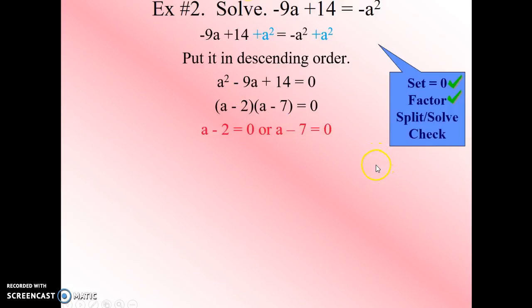Next, we're going to split it apart into two equations by setting each factor equal to 0. And then we'll solve each one by adding 2 on the left and 7 on the right equation. And we end up with a equals 2, or a equals 7.